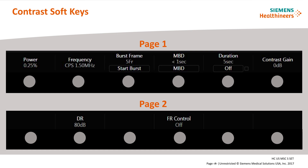Each page of the touchscreen contains contrast-related soft keys at the bottom of the screen. To adjust the controls, rotate the soft key on the control panel clockwise or counterclockwise to obtain the appropriate setting. This section of the presentation focuses on these soft key controls.